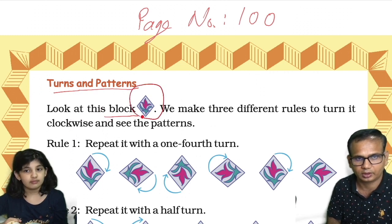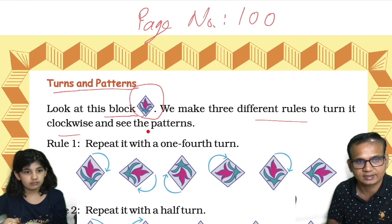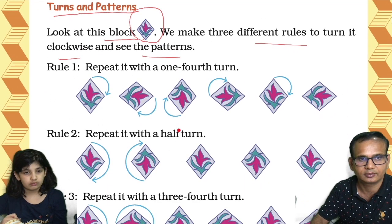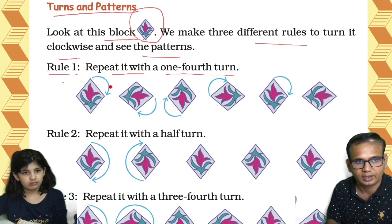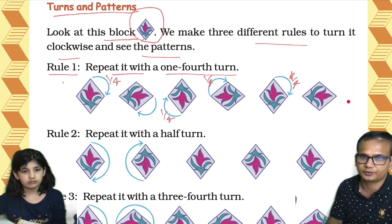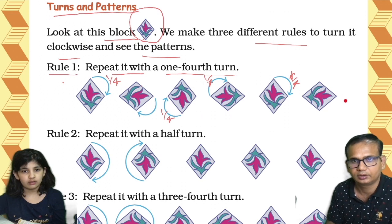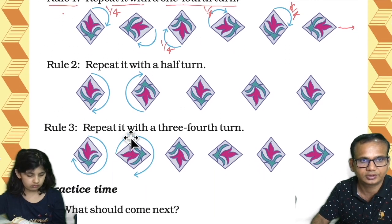Turns and patterns. Look at this block. We make three different rules to turn it clockwise and see the patterns. Rule one: repeat it with the one-fourth turn. So this pattern is repeating — one-fourth turn, then another one-fourth turn, then another one-fourth turn, then another one-fourth turn. The way we did in the last video, and then you get this image.